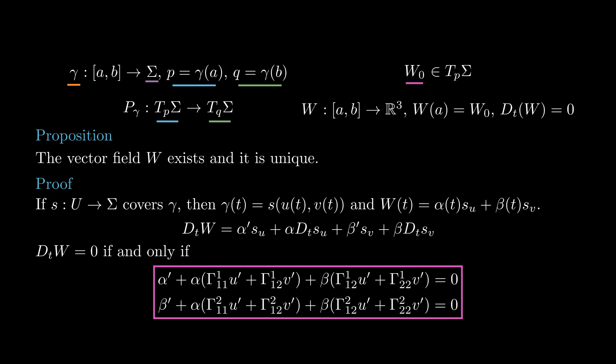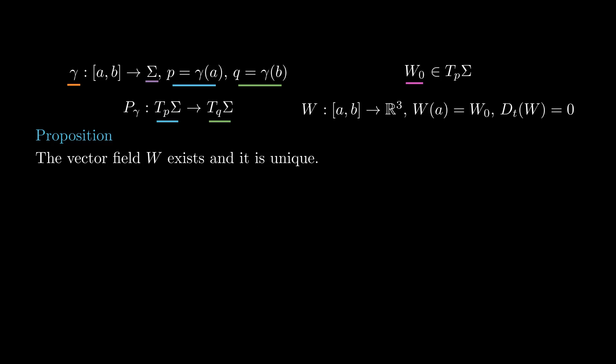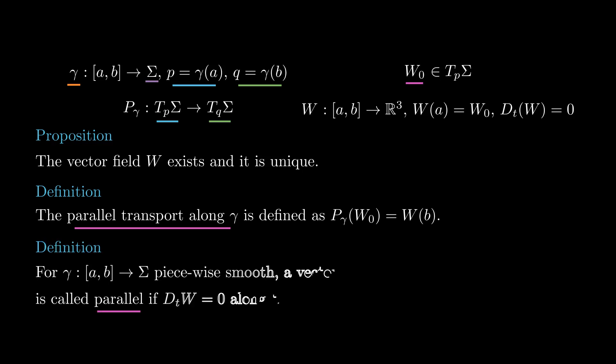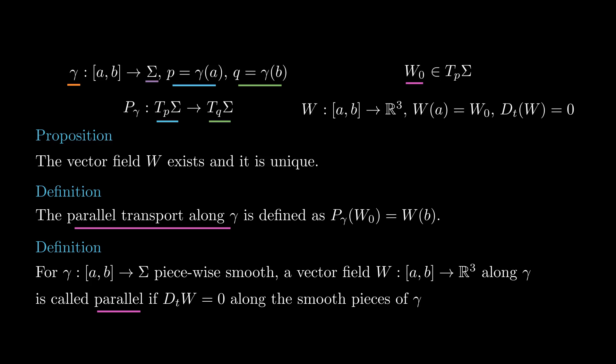In the case the curve gamma is not covered by a single coordinate chart, we can break it into pieces such that each piece is covered by a coordinate chart and consider the parallel transport along each piece separately, proving the proposition in general. Notice that this trick also allows us to define parallel transport along curves that are only piecewise smooth. A vector field like the one constructed in this proposition is called parallel.